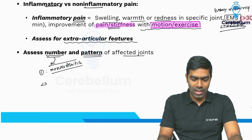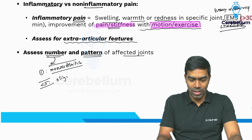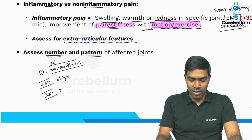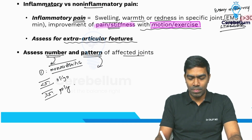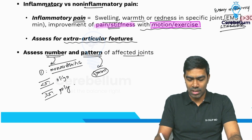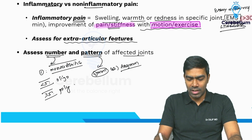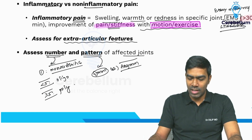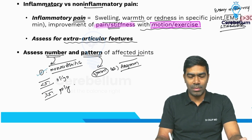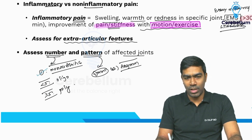If less than five joints are involved, it is oligoarticular. If five or more joints are involved, it will be polyarticular. When it comes to pattern, you need to know whether it's a symmetric or asymmetric arthritis. Generally, monoarticular involvement must be asymmetric because only one joint is involved.